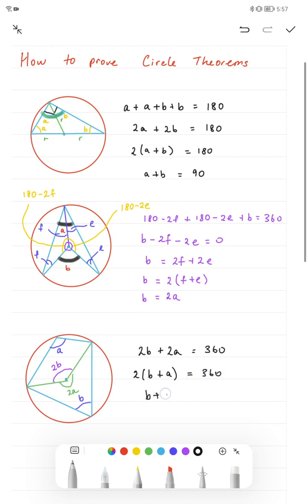Divide everything by 2. And I get B plus A is equal to 180, which shows us that the opposite angles must equal 180.